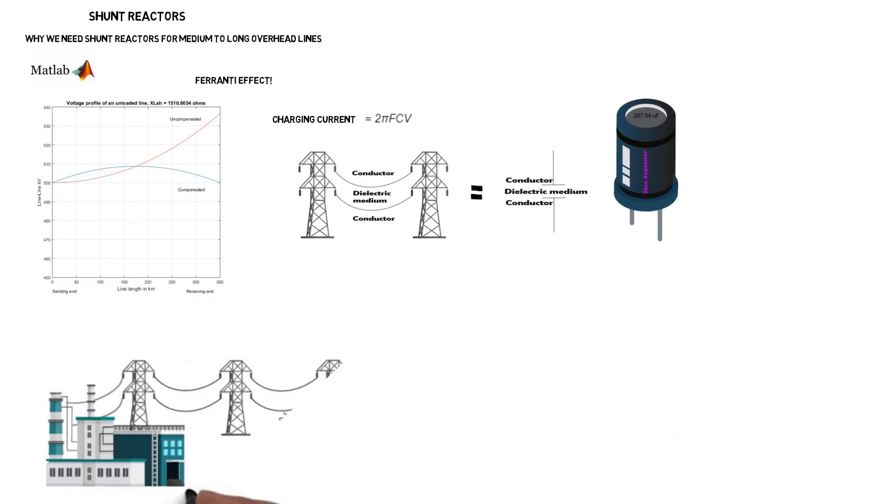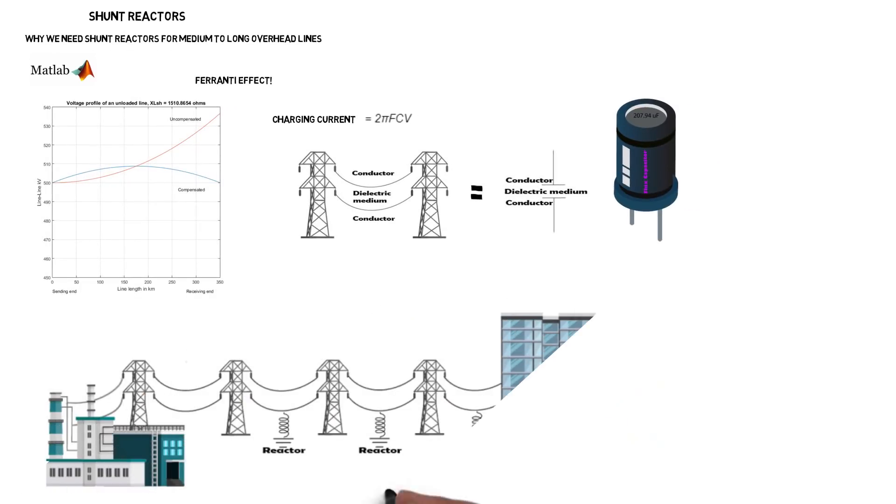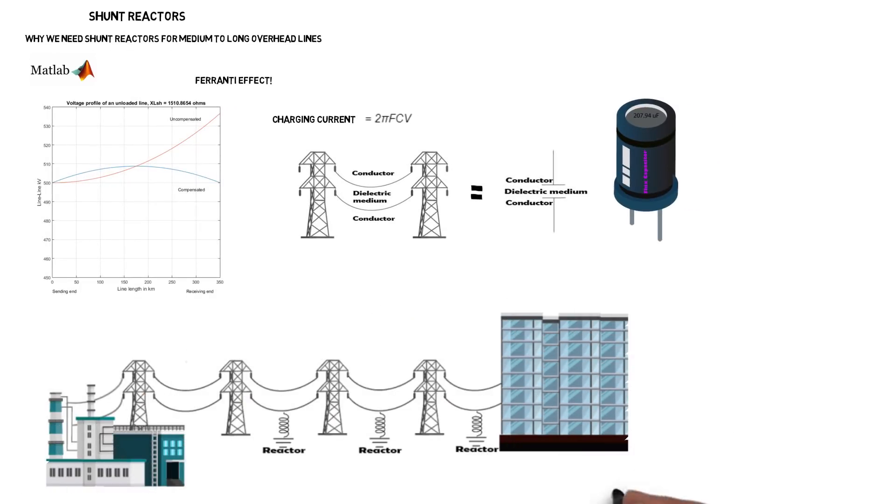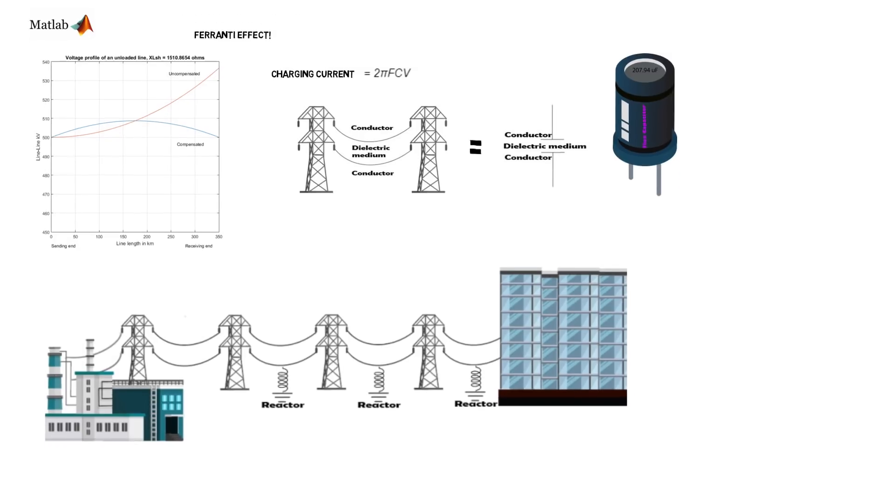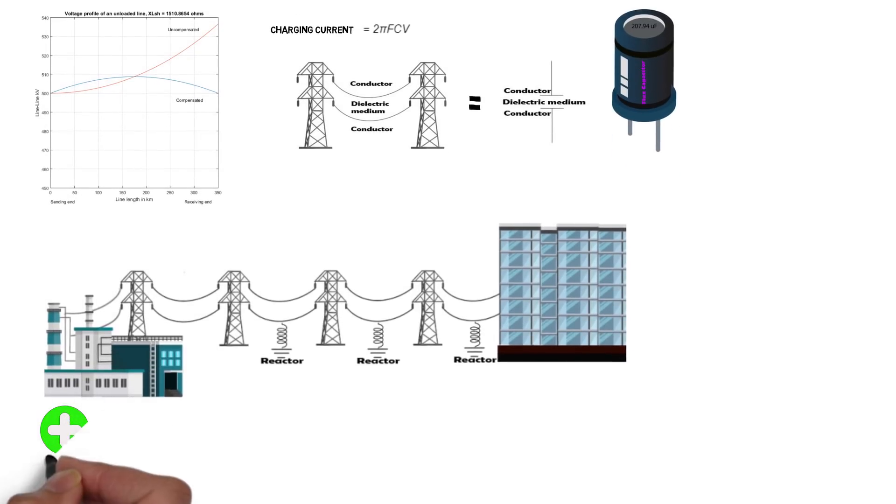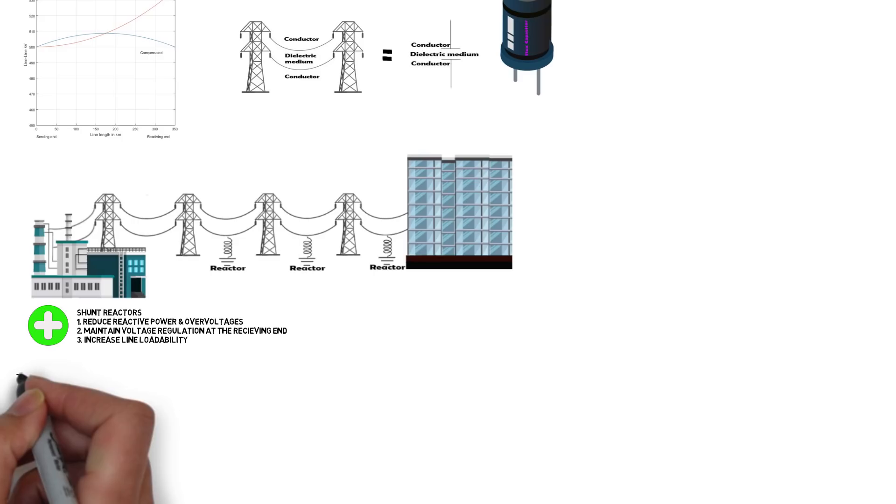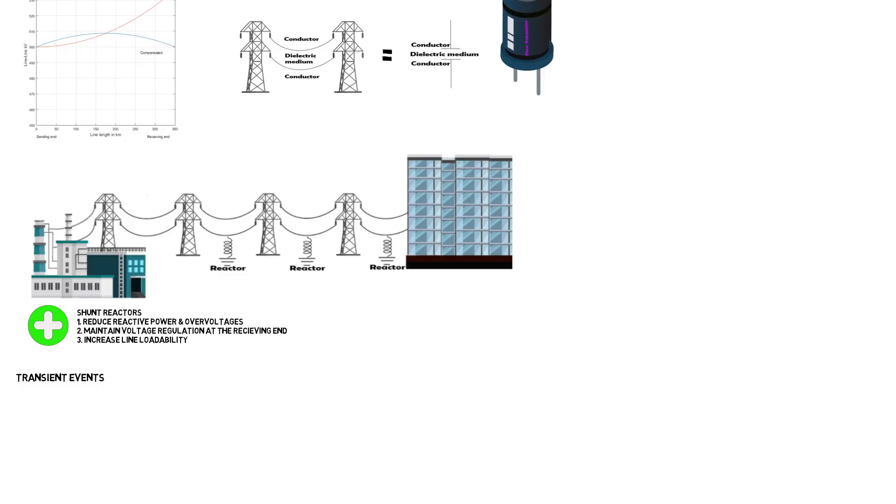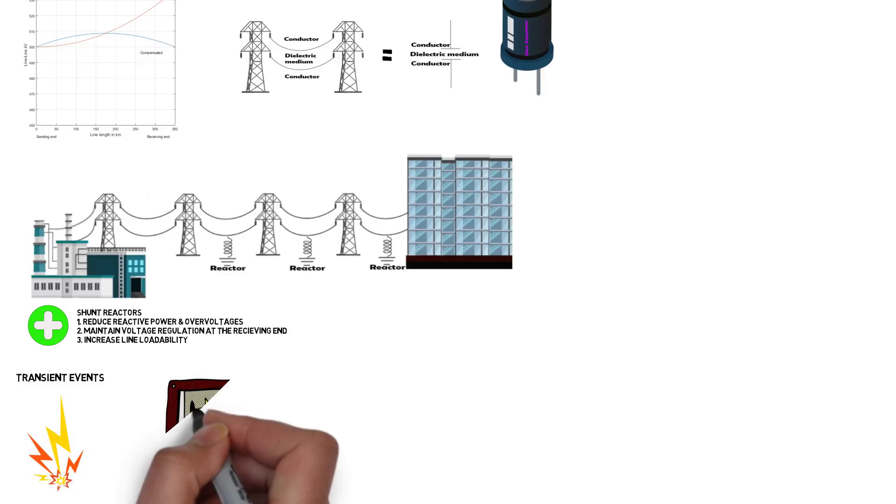Shunt inductors are usually installed at the receiving end or at points along the line from phase to neutral for all phases. Reactors by definition can absorb unwanted reactive power, reduce over voltages and maintain the voltage at the receiving end. For transient events such as lightning and switching, reactors will reduce any over voltages.